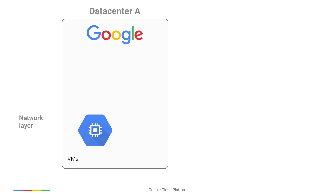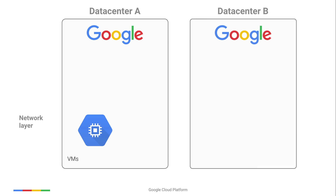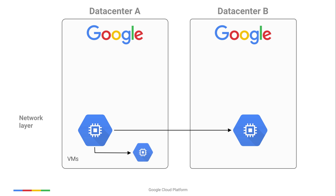Let's talk about encryption at the network layer, or layer 3. Google Cloud's virtual network infrastructure encrypts VM-to-VM traffic if it crosses a physical boundary not controlled by Google. The communicating hosts perform a handshake, and then encrypt data using AES 128. All data in transit at layer 3, whether or not it leaves a physical boundary, is authenticated. This protects a compromised host from spoofing packets on the network.